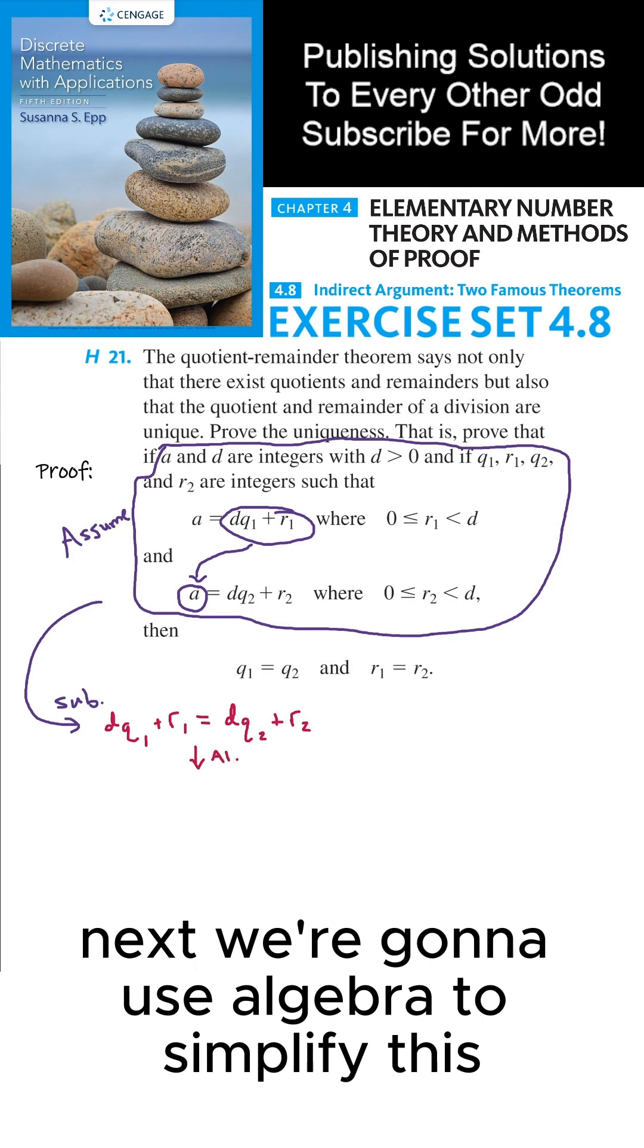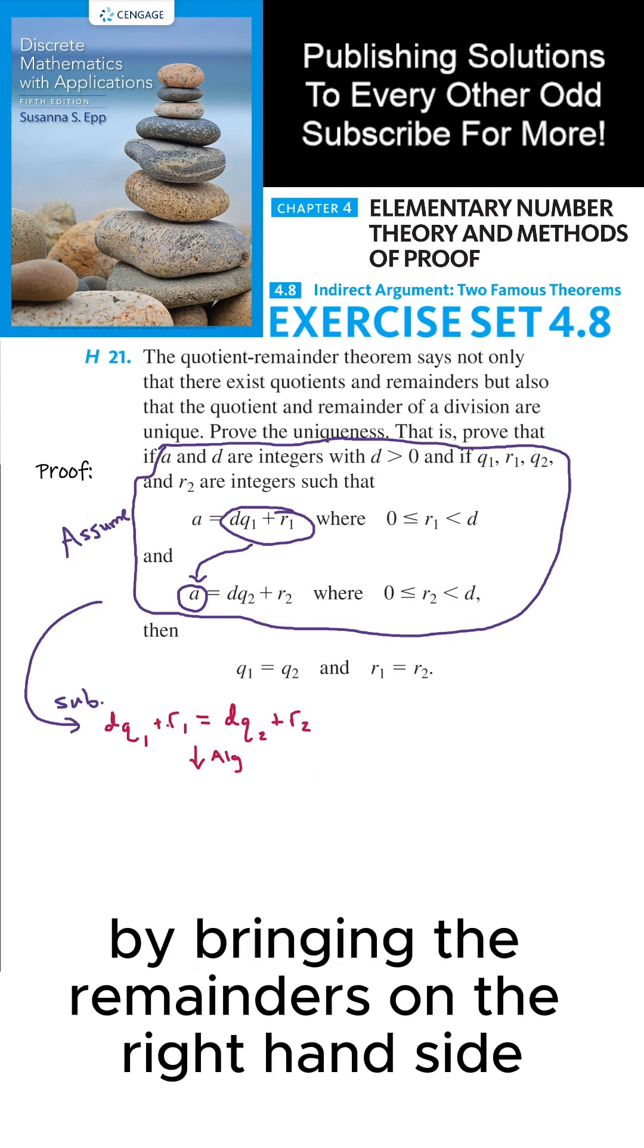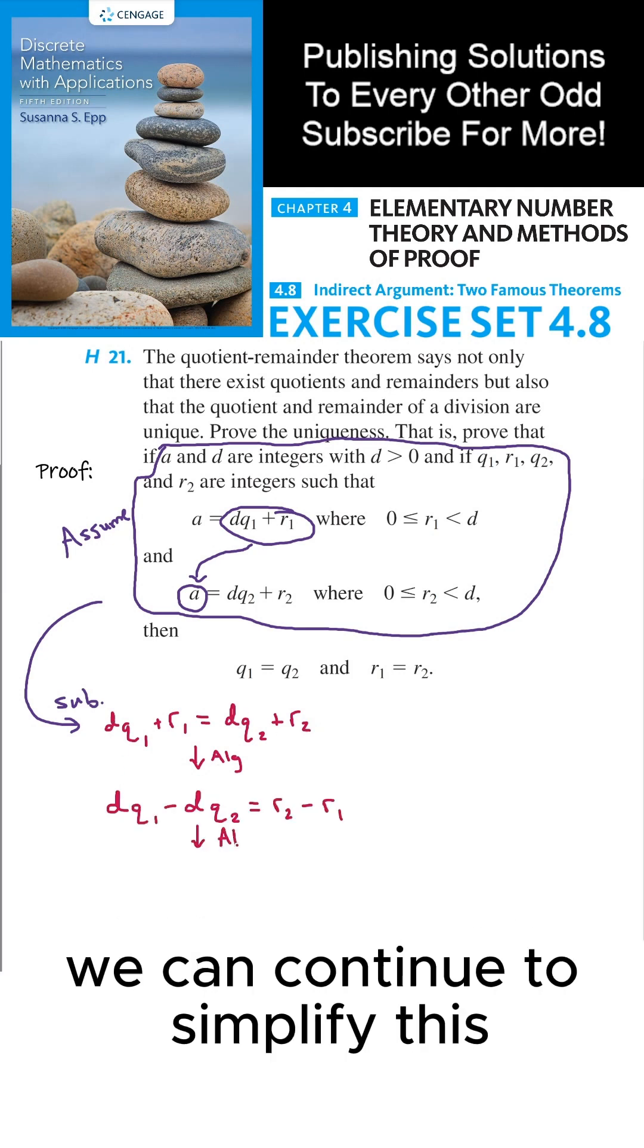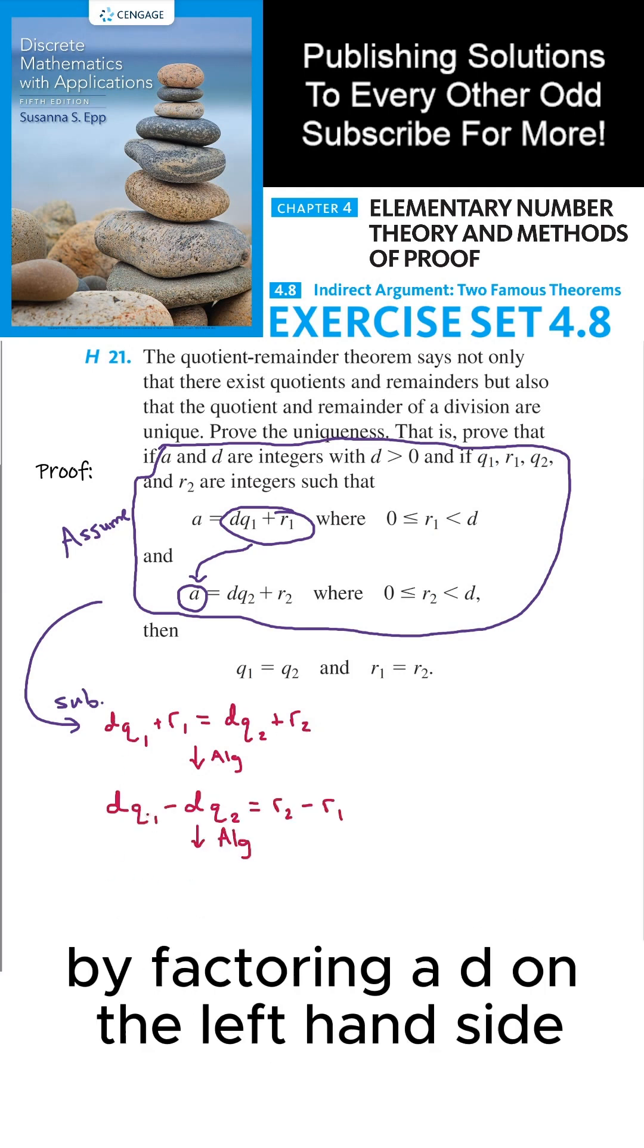Next, we're going to use algebra to simplify this by bringing the remainders on the right-hand side and the quotients on the left-hand side. We can continue to simplify this by factoring a D on the left-hand side.